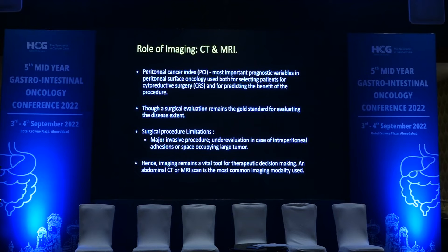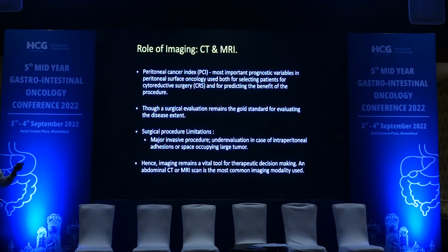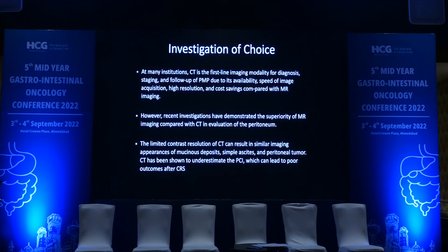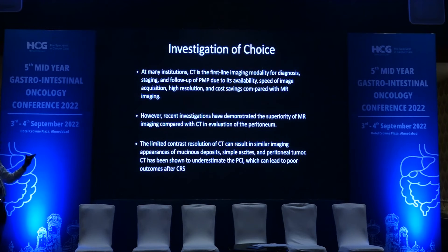The peritoneal cancer index is the most important prognostic factor, though surgical evaluation remains the gold standard. Where surgical evaluation has limitations: it is a major invasive procedure, there can be underestimation in the presence of intraperitoneal adhesions, and a large space-occupying tumor can obscure vision beyond it. Hence imaging plays a vital role before surgery. Most institutions use CT as the first-line investigation; however, recent studies have demonstrated the superiority of MRI over CT in evaluation of the peritoneum. The limited contrast resolution of CT results in similar imaging appearance of mucinous deposits, simple ascites, and peritoneum, and CT has shown underestimation of PCI which can lead to poor outcomes after CRS.